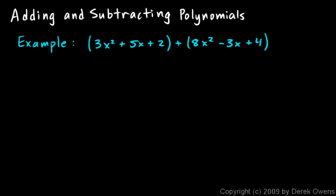But we could write them vertically like this. Now, we're adding these two, so we would write it like this: 3x² + 5x + 2 plus 8x² - 3x + 4, and draw a line and we add them.